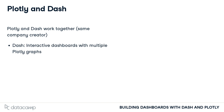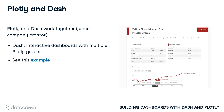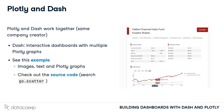Check out this finance dashboard. We can see it has images, text, graphs, and formatting. You could find the code for the line chart by searching for go.scatter in the source code.